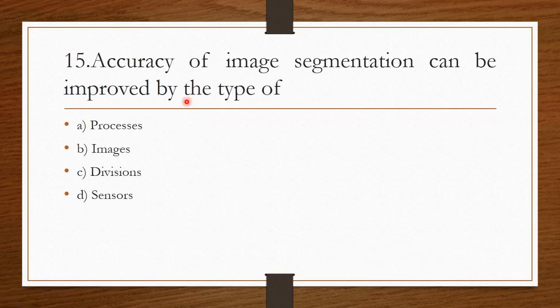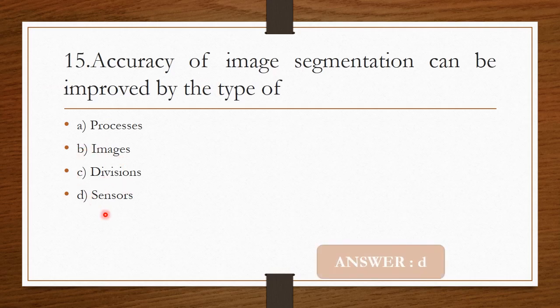Question 14: Accuracy of image segmentation can be improved by the type of — Option A: Process. Option B: Images. Option C: Divisions. Option D: Sensors. The correct answer is Option D — Sensors.